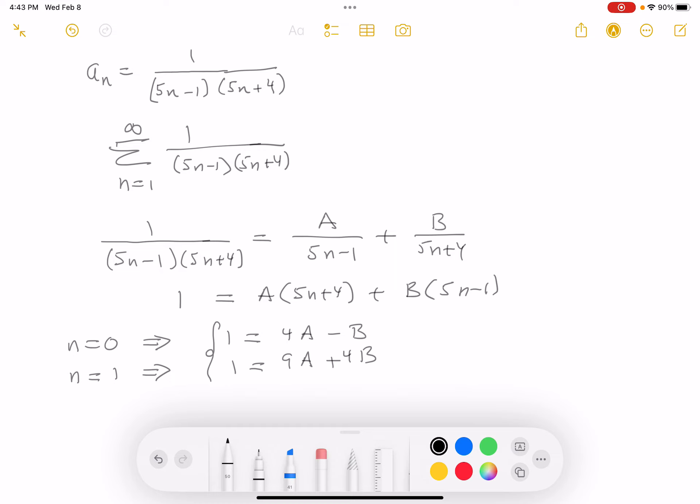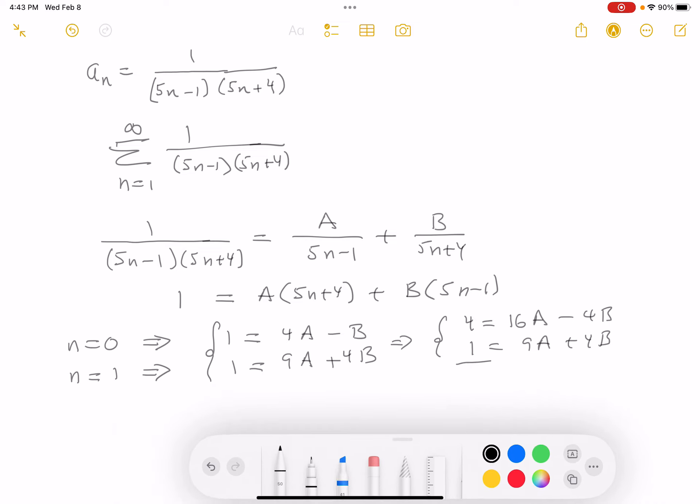These are two equations, two unknowns. I'm going to multiply the top equation by four. And you get four. That would be 16 A. Let's see, minus four B. The bottom equation, I'm not touching it. That's going to be one equals nine A plus four B. And the point of that was to get something to disappear. And what happens over there? You get five and nine is 16 is 25 A. And the B's disappear. So I know A is one fifth now.